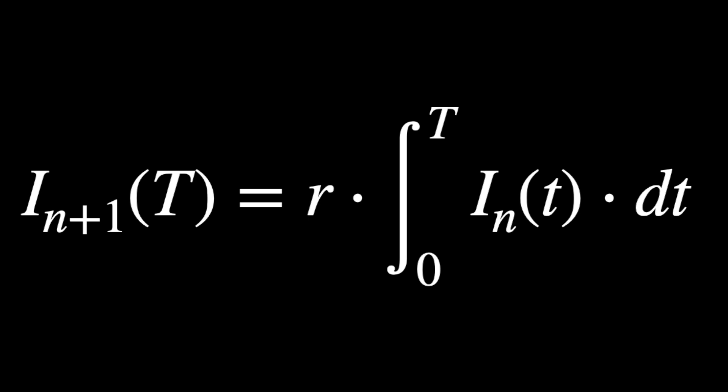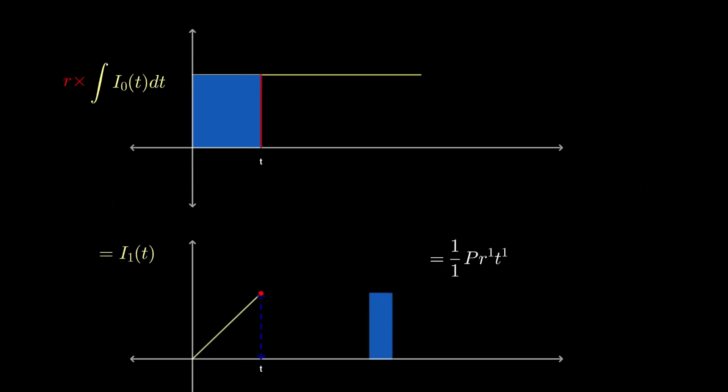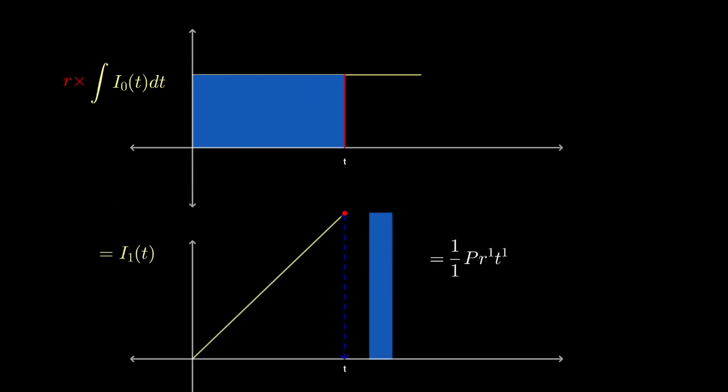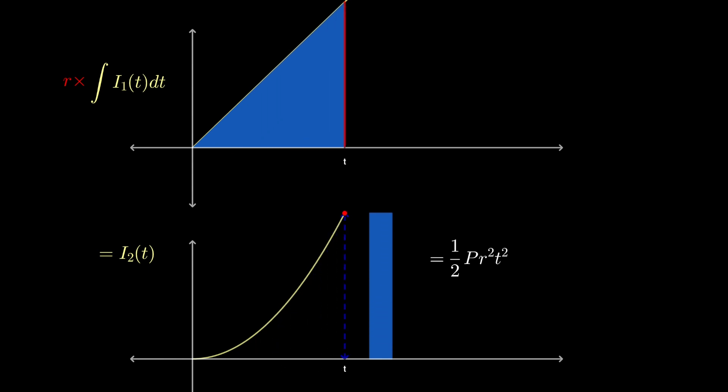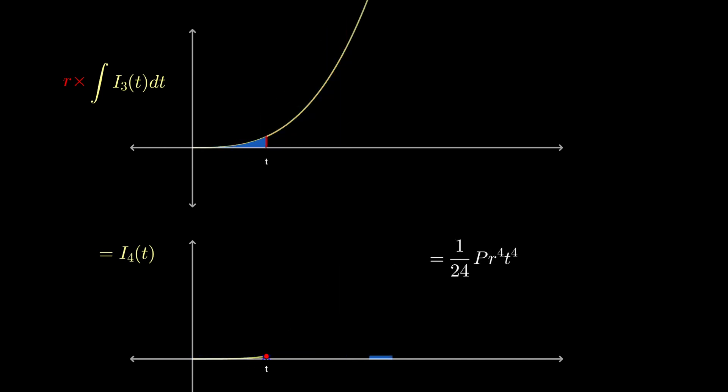We can now see a pattern. I sub 1 is PRT. I sub 2 is one-half PR squared T squared. I sub 3 is one-sixth PR cubed T cubed, and I sub 4 is one-twenty-fourth PR to the fourth T to the fourth.